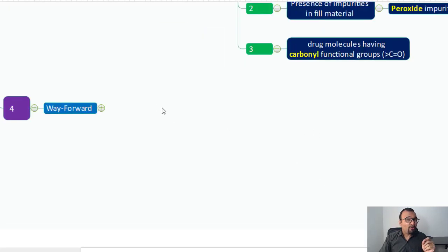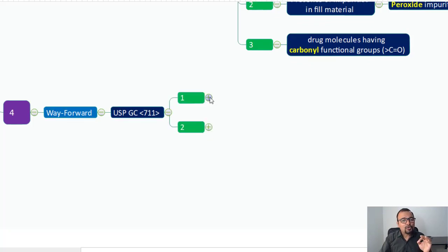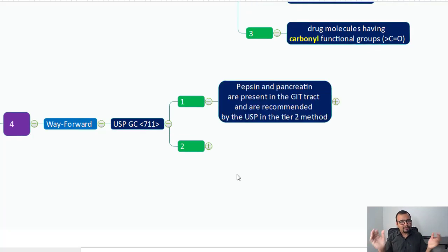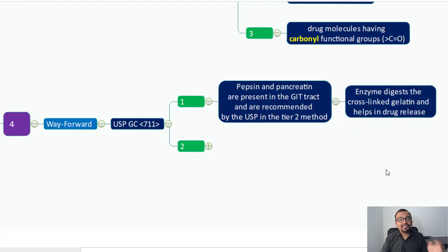Now what is the way forward? If you start observing cross-linking maybe at the beginning of your product or during shelf life storage, during stability study, as per USP general chapter 711, you can conduct the two-tier dissolution analysis. Pepsin and pancreatin are present in our gastrointestinal tract and are recommended by the USP in the tier 2 method. Why? Because this enzyme digests the cross-linked gelatin and helps in drug release.